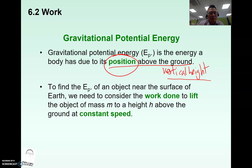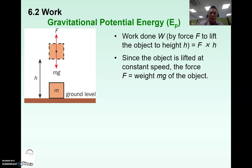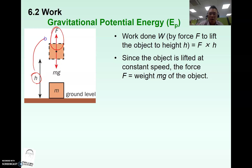The formula for potential energy due to height is actually work done to lift the object up. In this case, the force you are looking at is upwards, and the distance moved is h. To lift the object from ground level to a height h above the ground, the force is upwards and the distance moved is upwards — these two are in the same direction — so you actually have positive work done for the object.